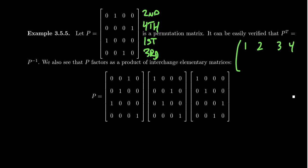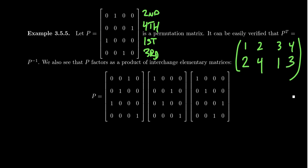We can think of it this way: taking the first, second, third, and fourth rows of the identity, the first became the second — we put the second row in place of the first. The second row became the fourth. The third became the first, and the fourth became the third. So: one went to two, two went to four, three went to one, and four went to three. This is what we mean by a permutation — things got switched around.